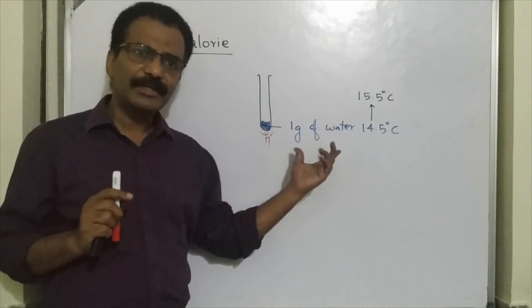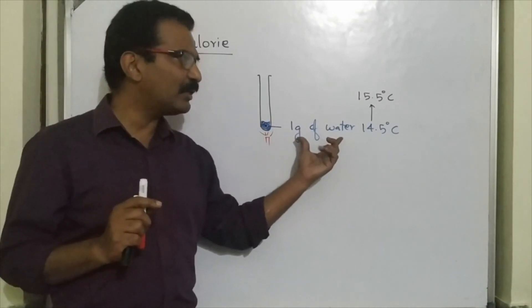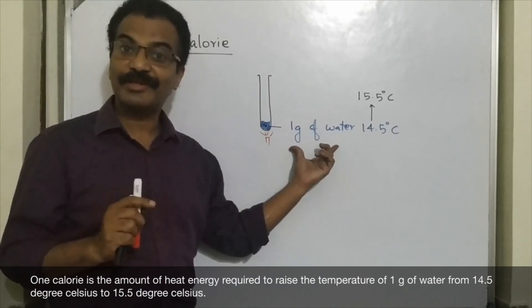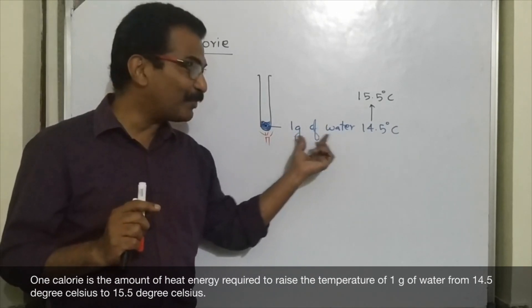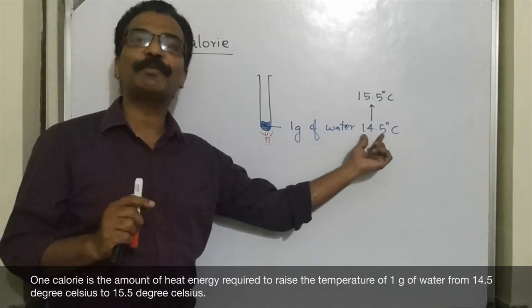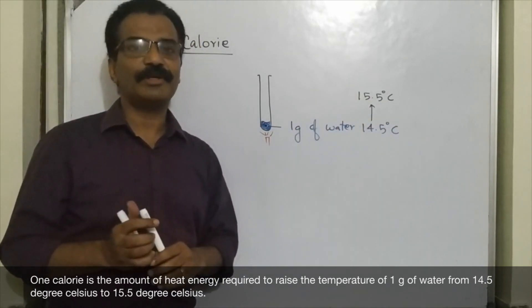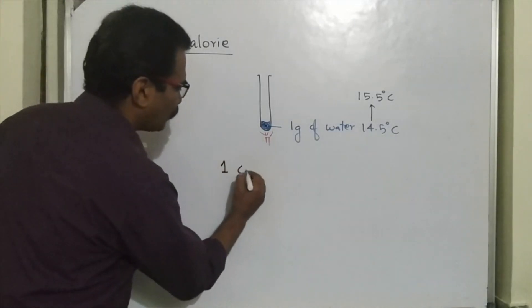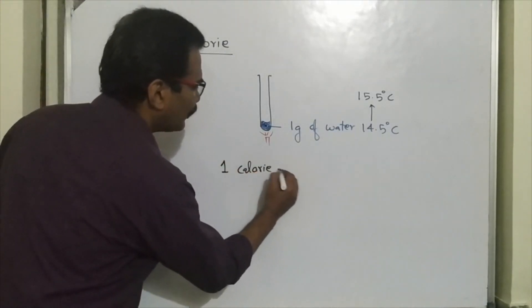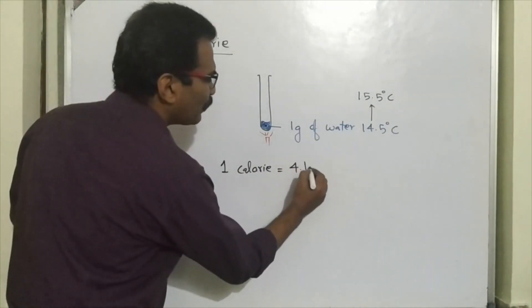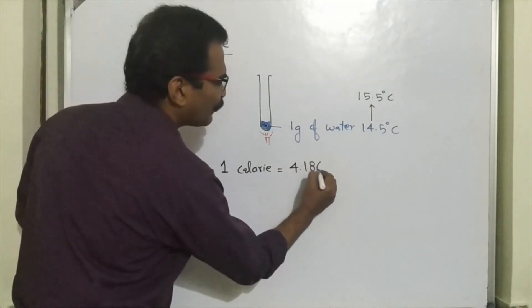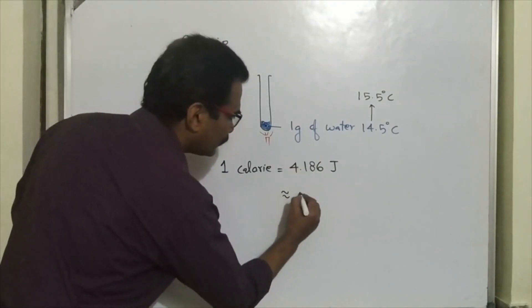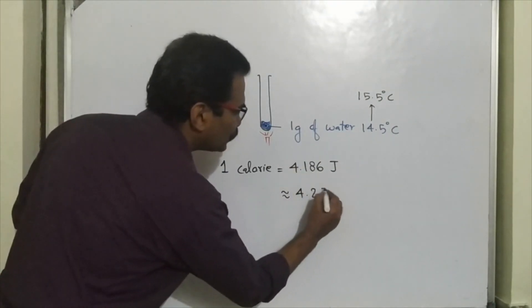In smaller classes you might have learned this differently — that 1 calorie is the heat required to raise the temperature of 1 gram of water through 1 degree Celsius. That is not wrong, but the standard definition requires the specific temperature range from 14.5 to 15.5 degrees Celsius. 1 calorie is equal to 4.186 joules, sometimes approximated as 4.2 joules.